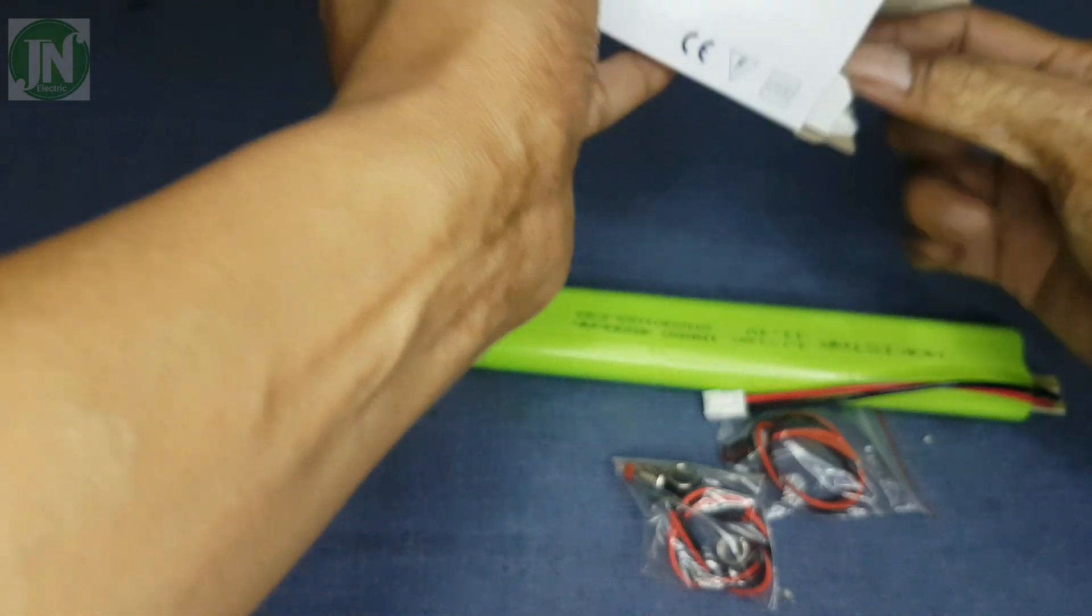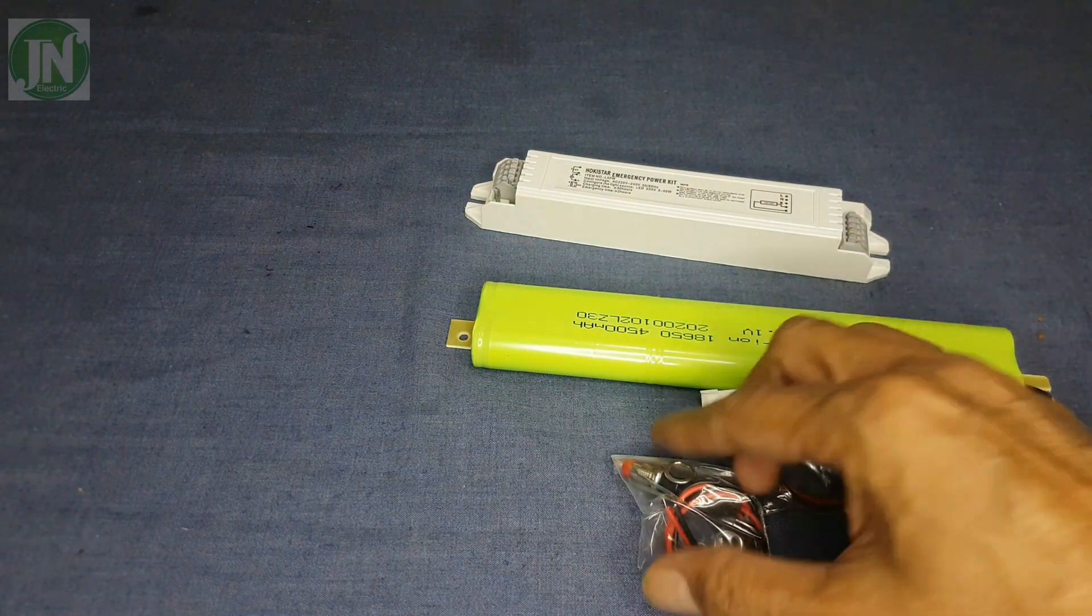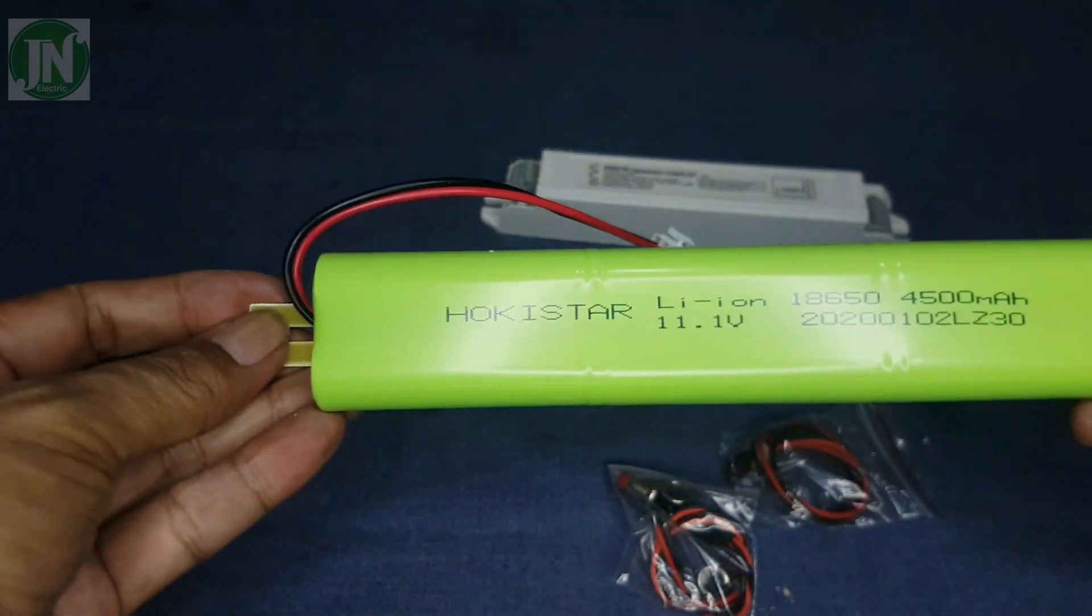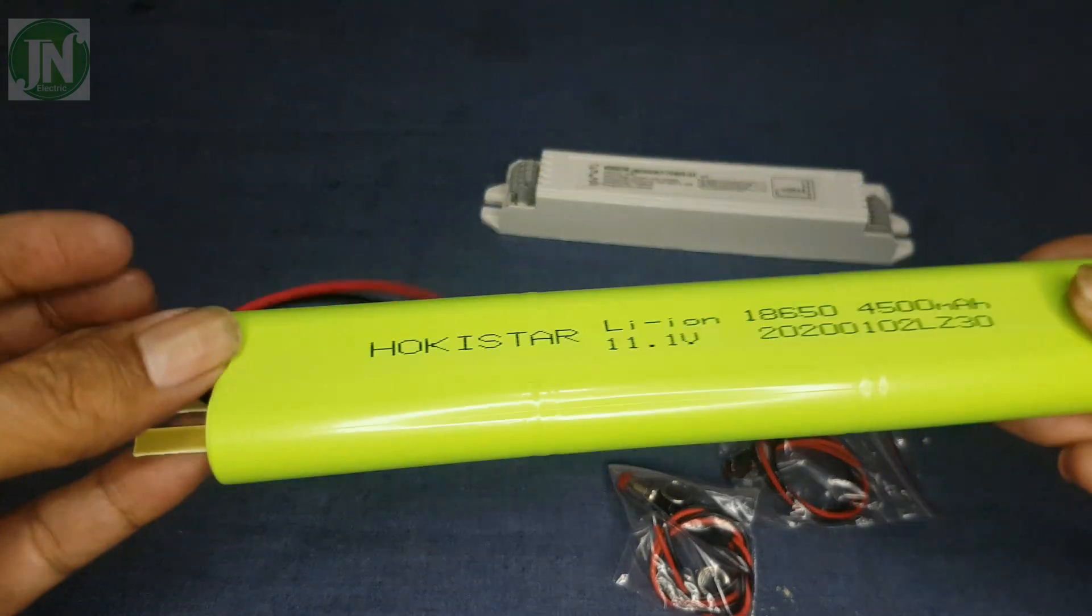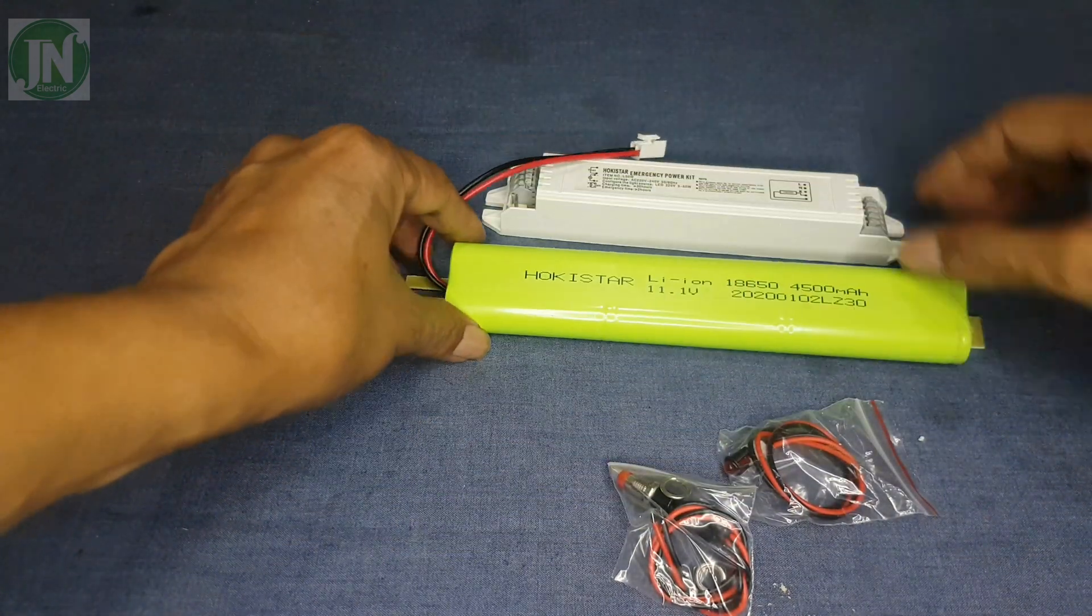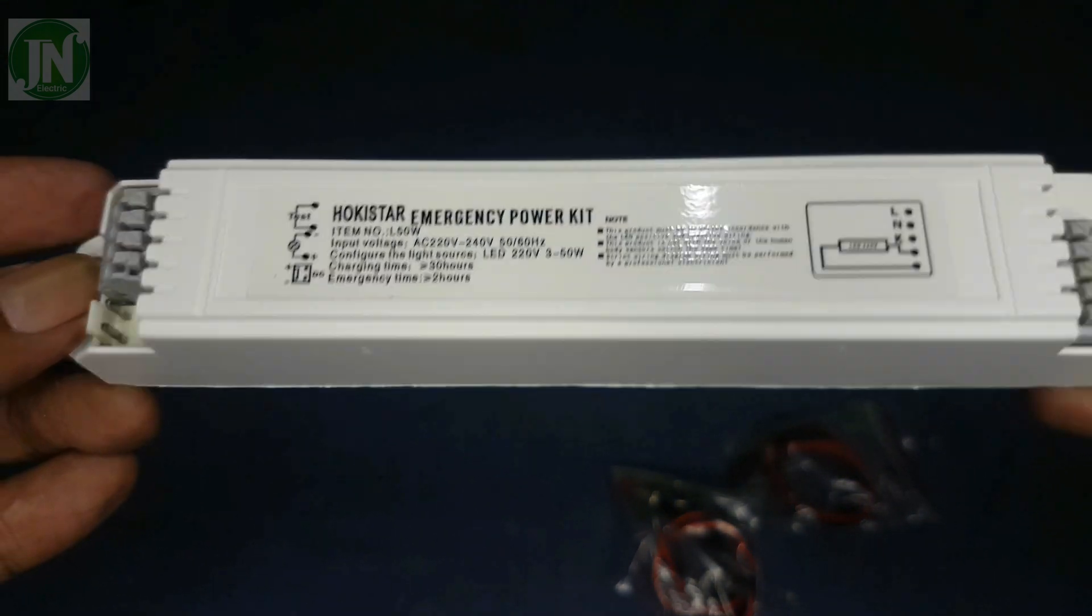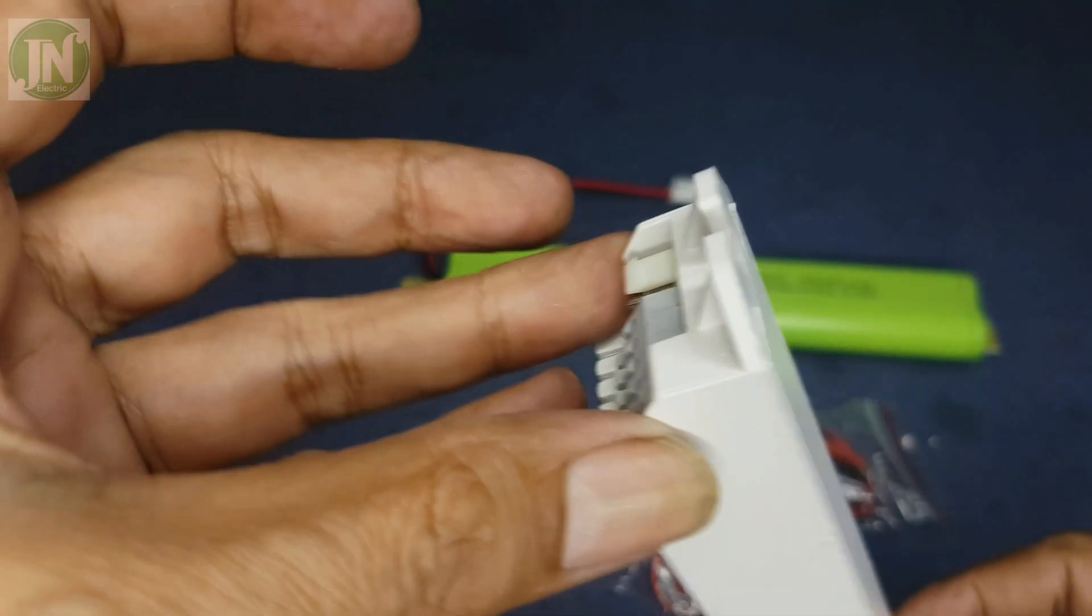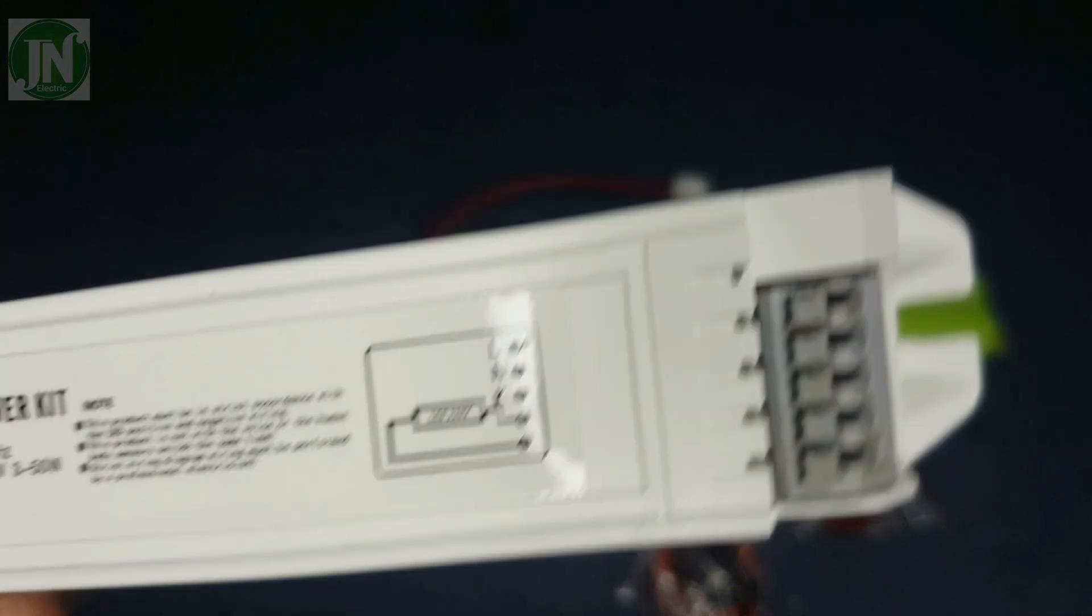This is a battery that can be charged with a capacity of 11.1V, 2500 mAh. The white one is called the emergency power kit. You can see the wiring diagram and terminals.